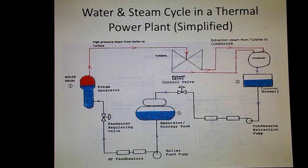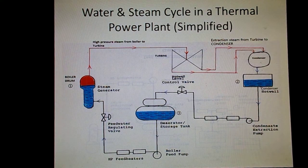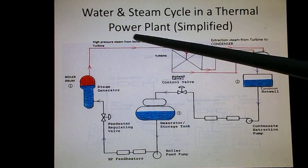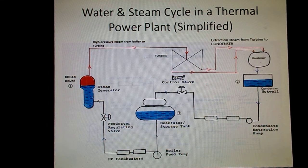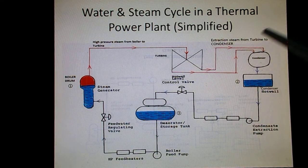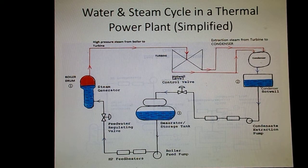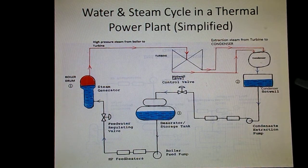First, there is a boiler drum having water storage. From the boiler drum, the steam goes to the turbine, where it is converted into mechanical work. The low pressure steam then goes to the condenser, where it is converted back into water.